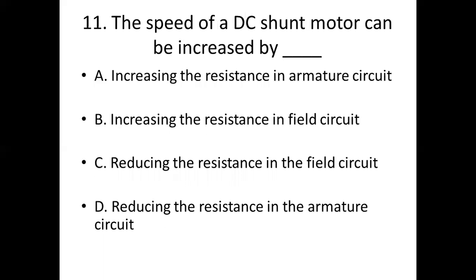Eleventh one. The speed of a DC shunt motor can be increased by dash. Option A: increasing the resistance in the armature circuit. Option B: increasing the resistance in the field circuit. Option C: reducing the resistance in the field circuit. Option D: reducing the resistance in the armature. Answer: Option B, increasing the resistance in the field circuit.